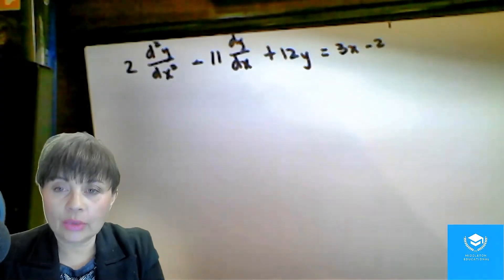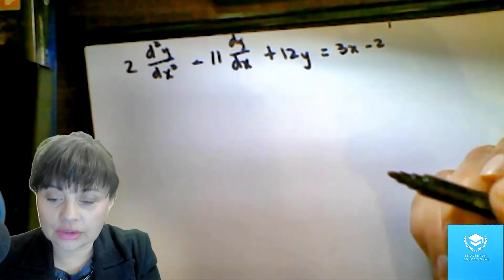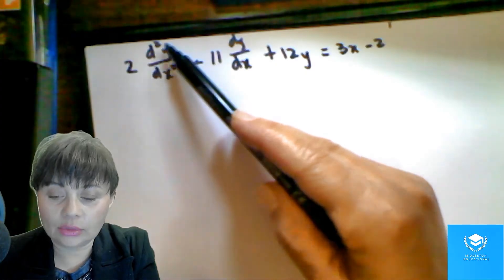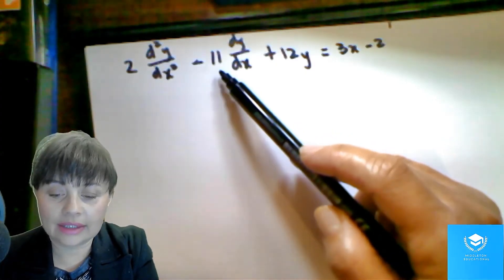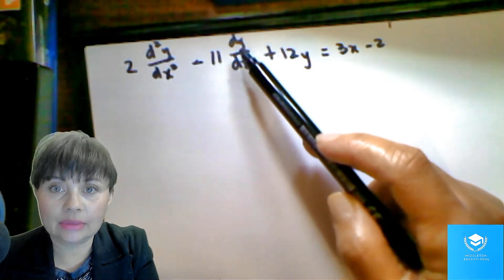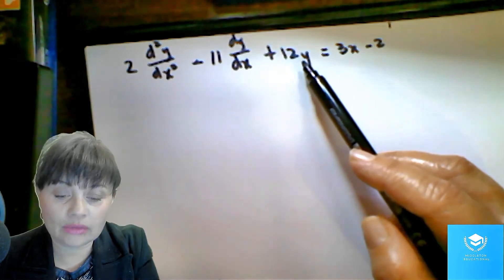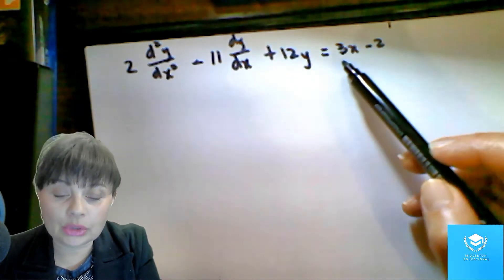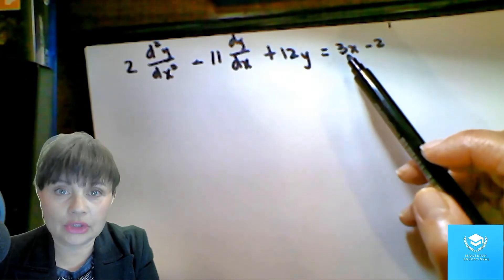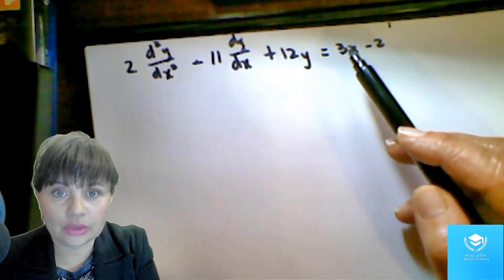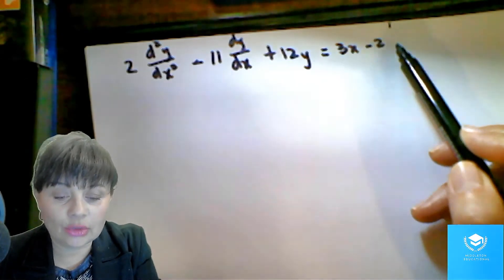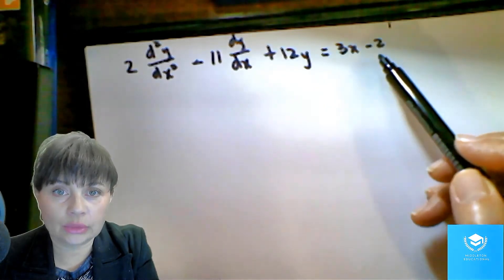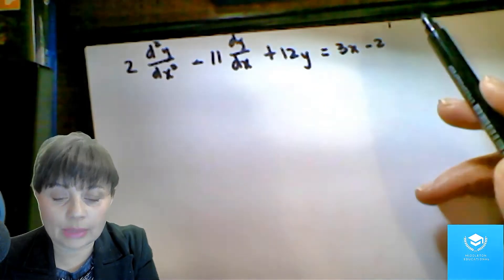So here we have our differential equation. You'll see it is 2 with a second derivative, minus 11 times the first derivative, plus 12y equals 3x minus 2. So because you have a non-homogeneous differential equation, that means that you have your equation equal to some function, which is 3x minus 2.